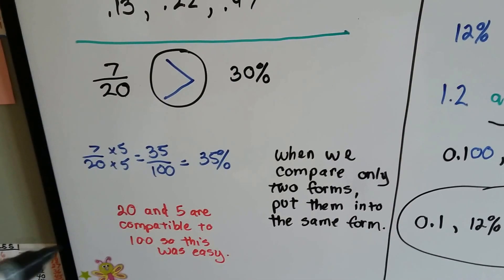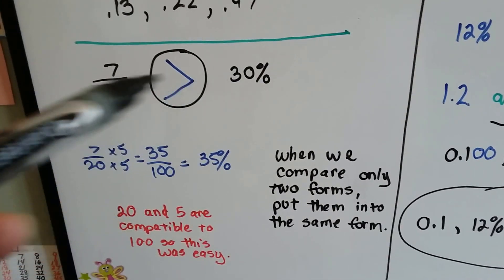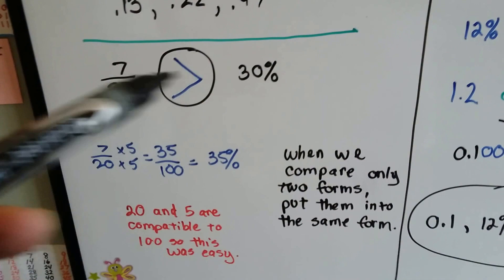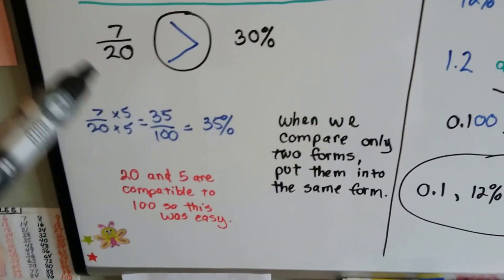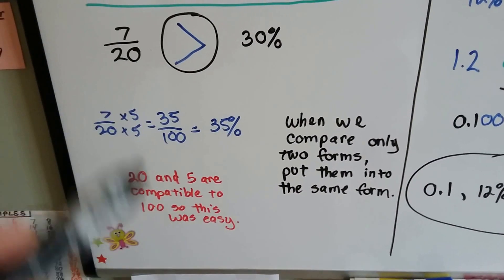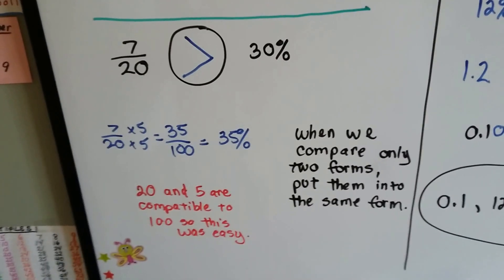When we compare only two forms, put them into the same form. It doesn't have to be decimals. Turn this one into a percentage, and then you can compare them easier. Just make apples to apples.